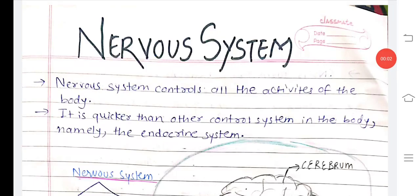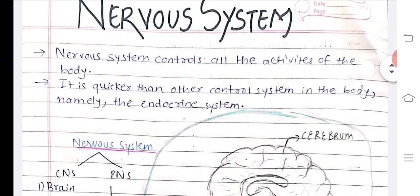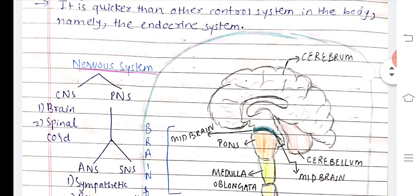Hello and welcome to Alisha's medical classes. Our today's topic is nervous system in physiology. The nervous system controls all the activities of the body and it is quicker than all the other systems in the body, namely the endocrine system.